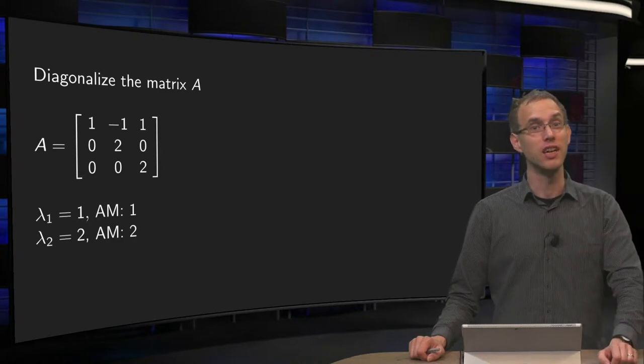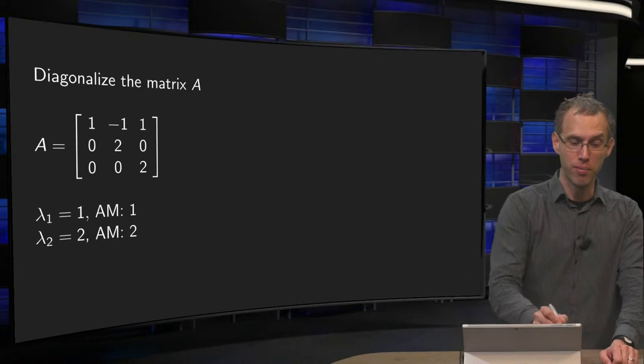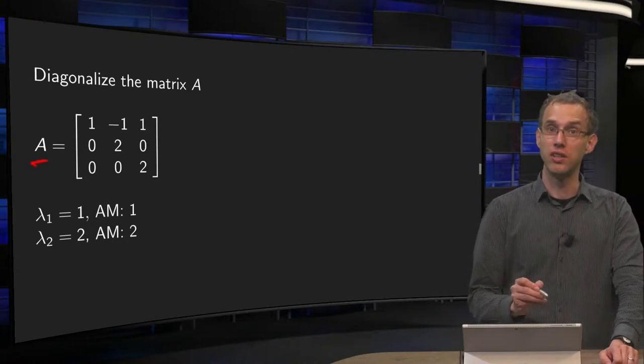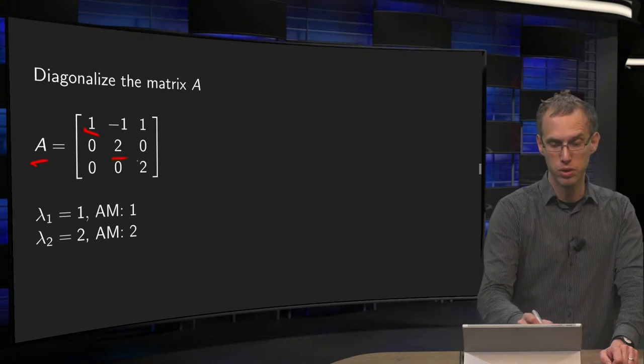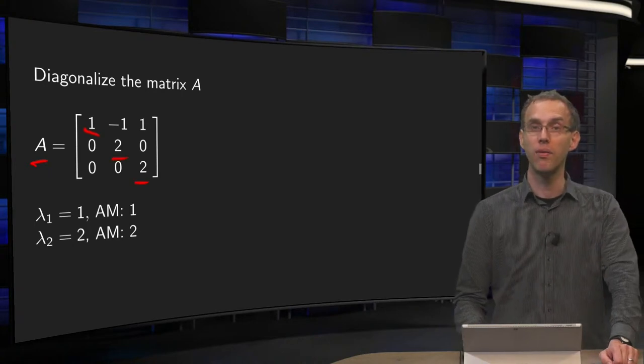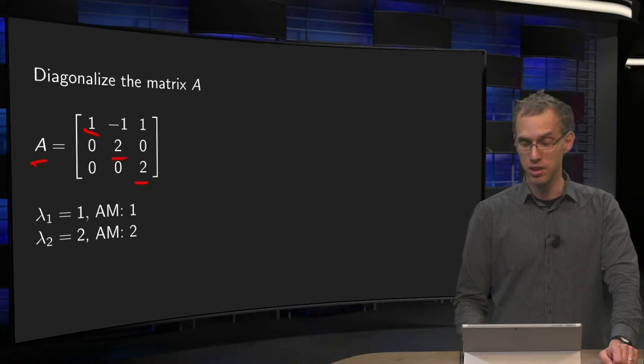That is what we will see in the following explicit example, with a matrix A, which is in triangular form, so you can read off the eigenvalues 1, 2 and 2, where the eigenvalue 2 has algebraic multiplicity 2.